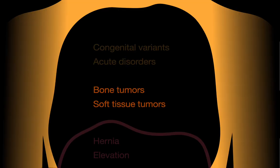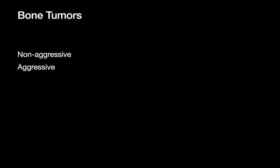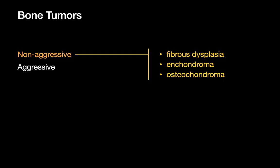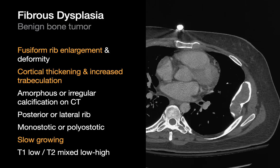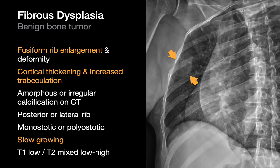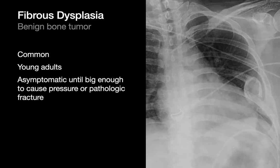Let's talk about chest wall neoplasms, starting with bone tumors. The three most common non-aggressive chest wall bone tumors are fibrous dysplasia, chondromas, and osteochondromas. Fibrous dysplasia is a benign bone tumor that often involves the ribs and results in focal fusiform enlargement of the rib. The cortex and trabecula may be thickened but should appear intact. Cases tend to involve the posterior and lateral segments of the ribs, are usually slow growing, and are generally left alone unless they grow big enough to cause symptoms.